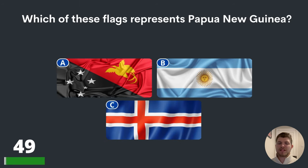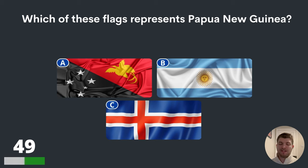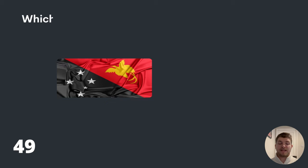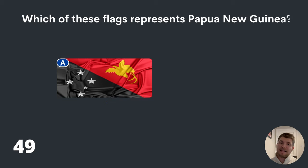Question forty-nine. Which of these flags represents Papua New Guinea? You've got A, B and C labelled there. Can you identify which one is Papua New Guinea? The answer is A.